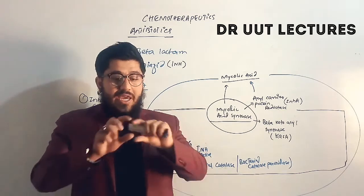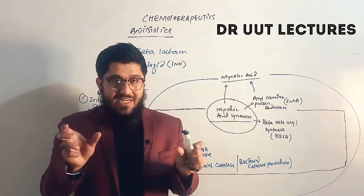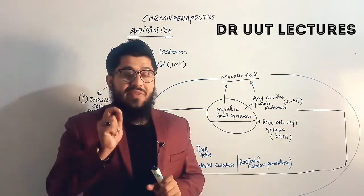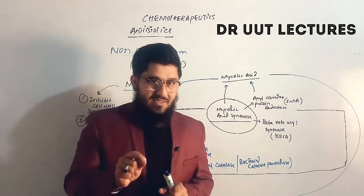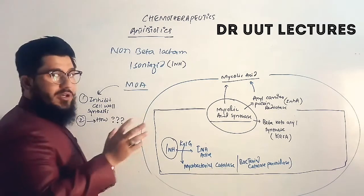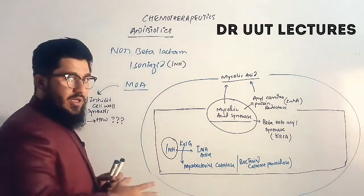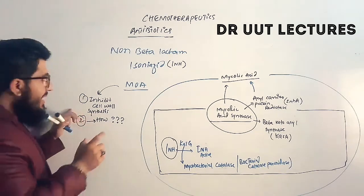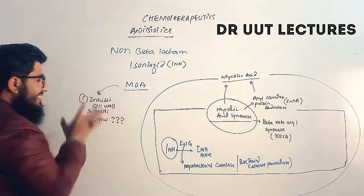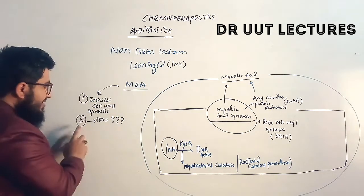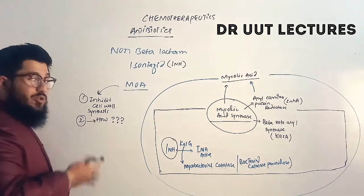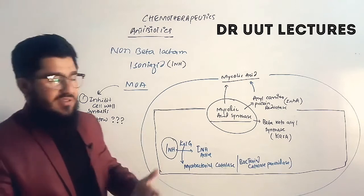Non-beta-lactams don't have the beta-lactam ring in their structure. Both beta-lactams and non-beta-lactams share a single important function: they inhibit cell wall synthesis. Isoniazid is shortly written as INH. The key question is how isoniazid inhibits cell wall synthesis.